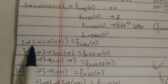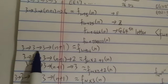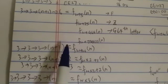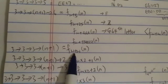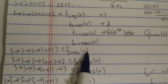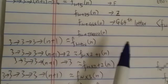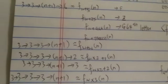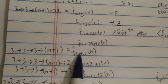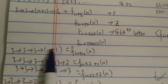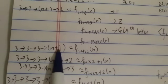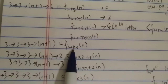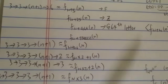I want to continue just to show you how crazy Tree(3) is. The formula here is: 3→3→3→(n+1) is around f(ω+ω, n) in terms of the fast-growing hierarchy. This is still a four-term chain arrow. So by just increasing the fourth term you are only reaching f(ω+ω, n).